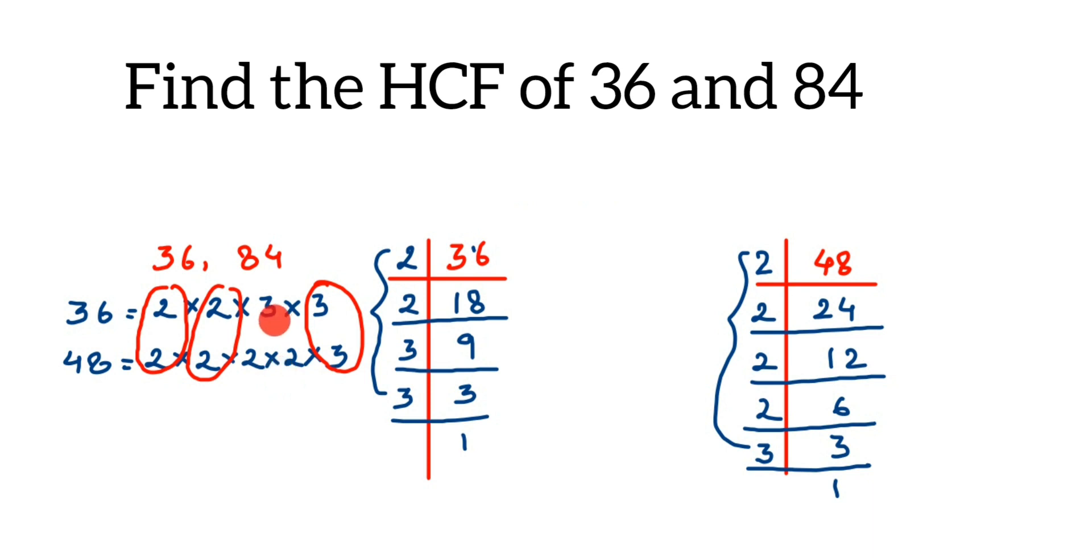From this pair I'll take one 2, from here I'll take another 2, and from this I'll take one 3. Multiply them: 2 times 2 is 4, 4 times 3 is 12. So the HCF of 36 and 84 is 12.